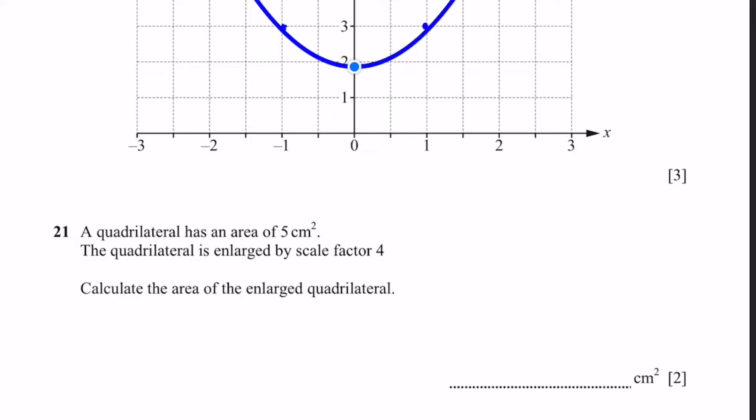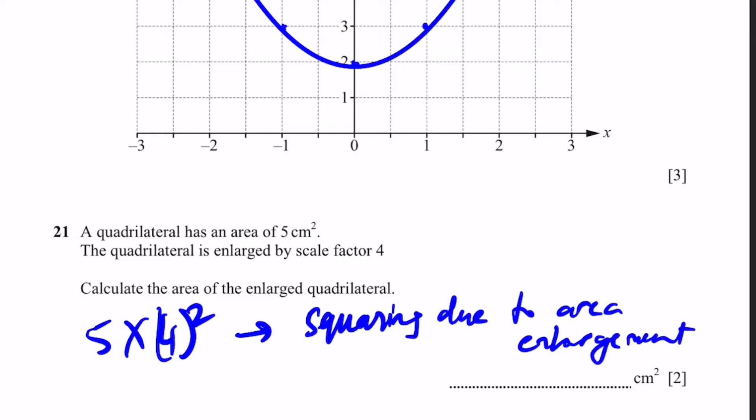Question 21. A quadrilateral has an area of 5 centimeters squared. It's enlarged by scale factor 4. Calculate the area of the enlarged quadrilateral. So that'll be equal to 5 times the scale factor squared. We're squaring it due to area enlargement, which means the area is being increased. Why specifically area? Because you're trying to calculate the area of the enlarged quadrilateral using the 5 centimeters squared original. So, we can say the area of the enlarged quadrilateral is going to be 80 centimeters squared. That's the answer.